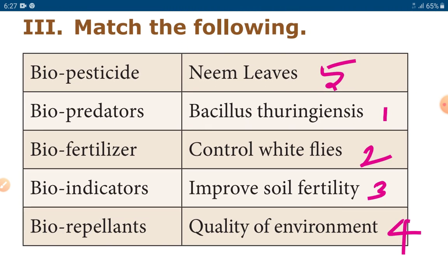Match the following: Biopesticide — Bacillus thuringiensis. Biopredators — controlled wild flies. Biofertilizer — improve soil fertility. Bioindicator — quality of environment. Biorepellent — neem leaves.